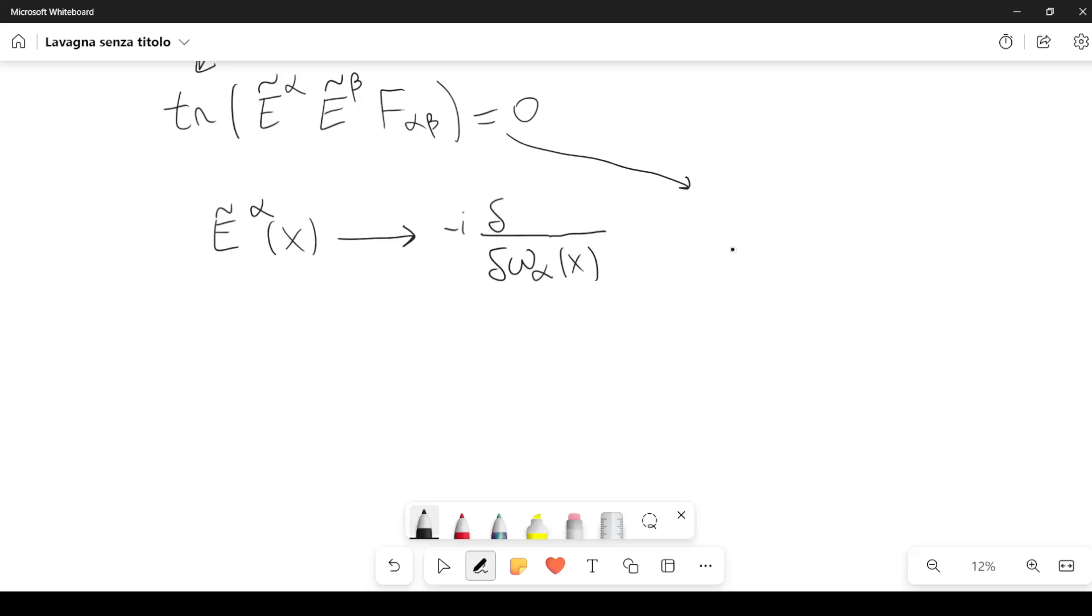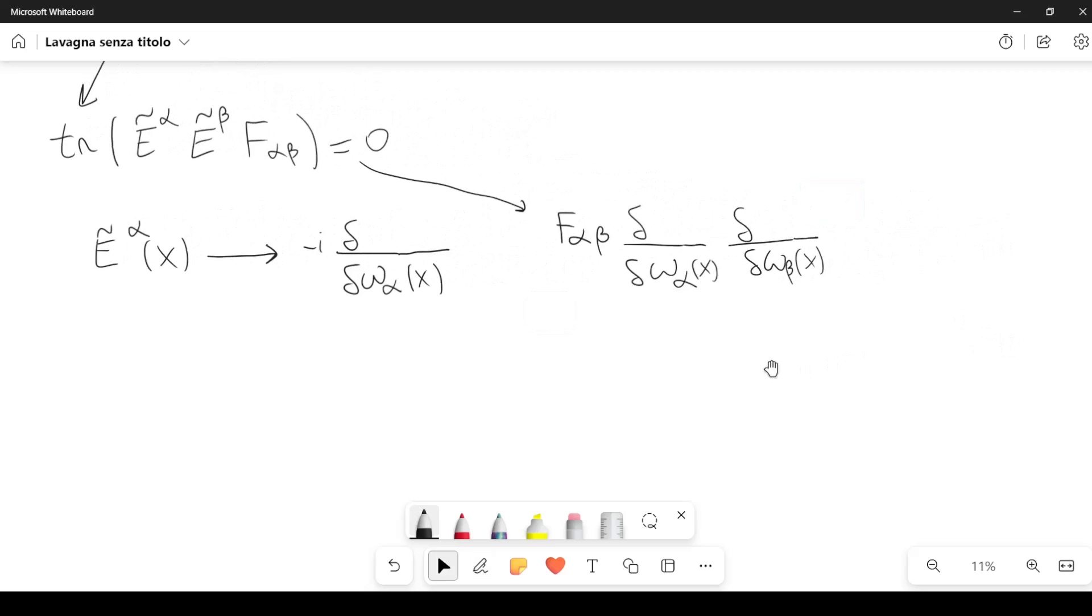So this equation will become, we replace this with the operators and we get something like this. I'm going to write f alpha beta first, and then I have the functional derivative with respect to omega alpha of x. Then I have a functional derivative with respect to omega beta of x. And then, of course, I need to put here some wave function, some wave function that I will call psi of omega equal to zero.